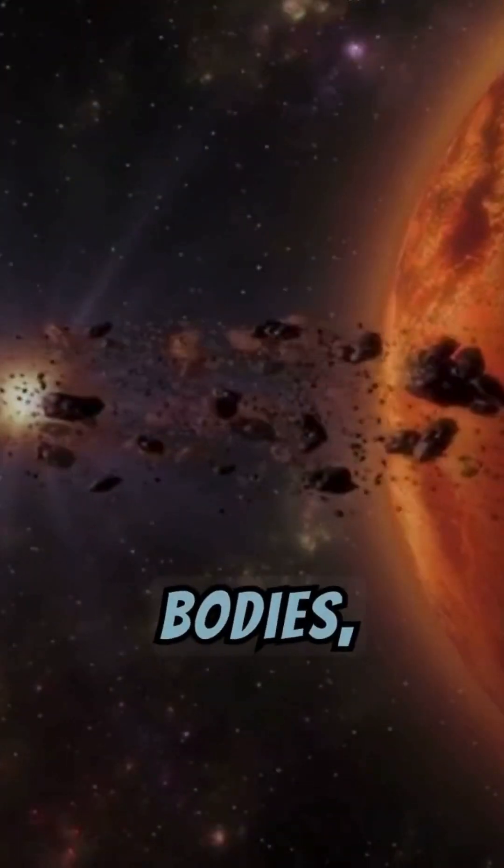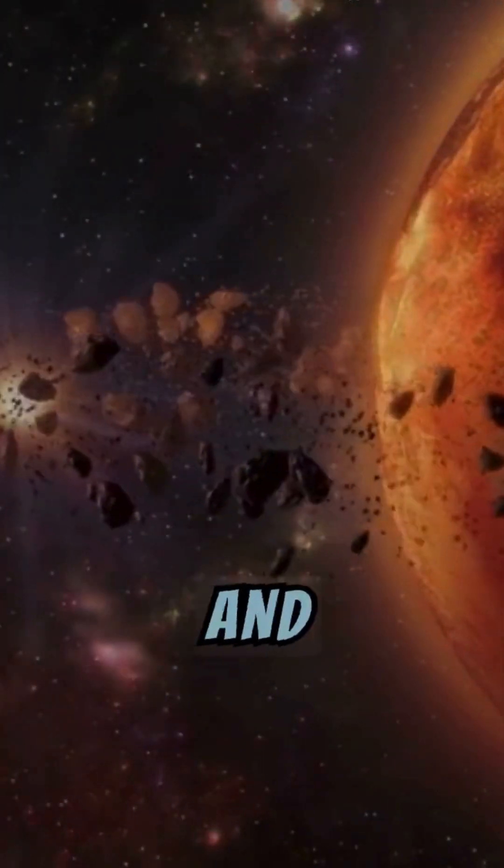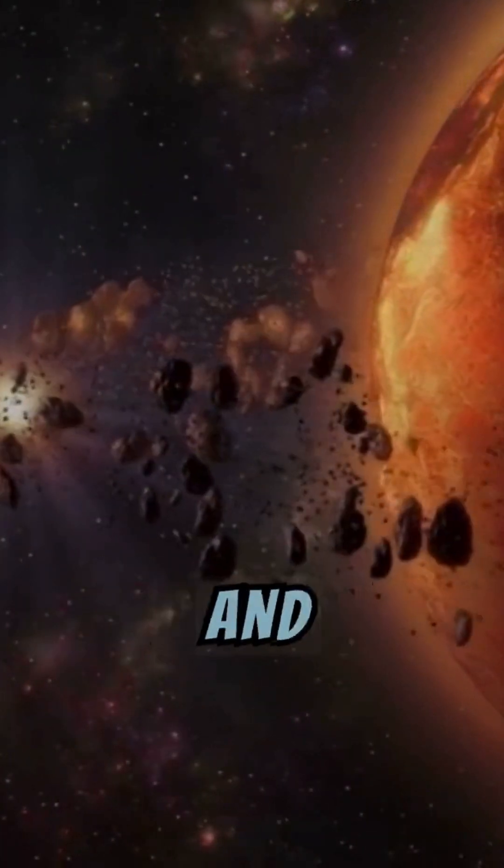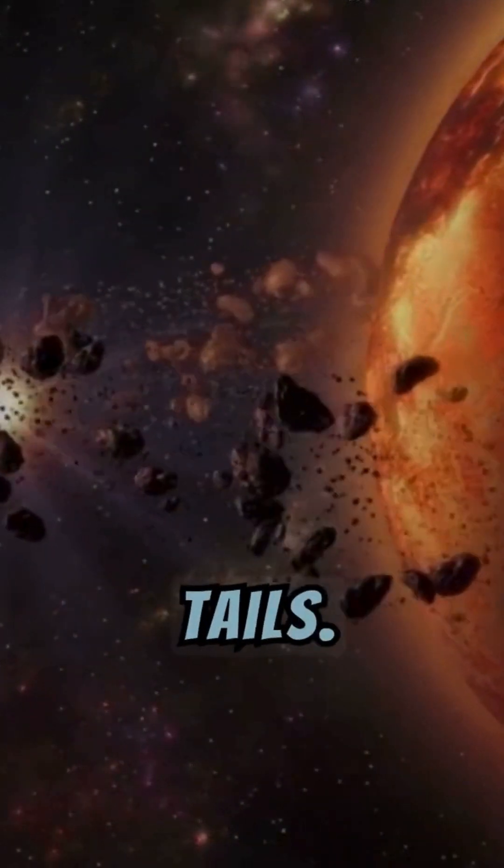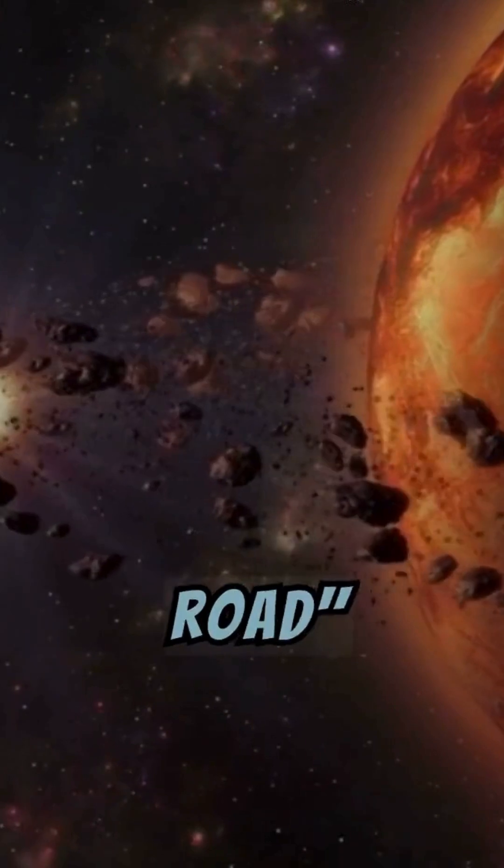Asteroids are rocky bodies, mostly found in the asteroid belt between Mars and Jupiter. They're made of metals and rocks, and they don't have tails. Think of them as the rocky road of space.